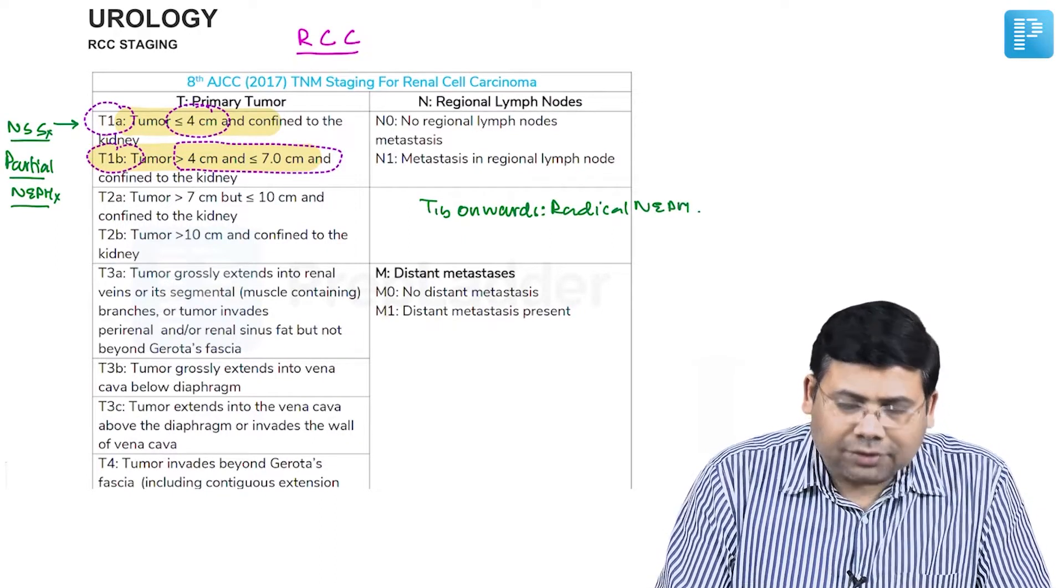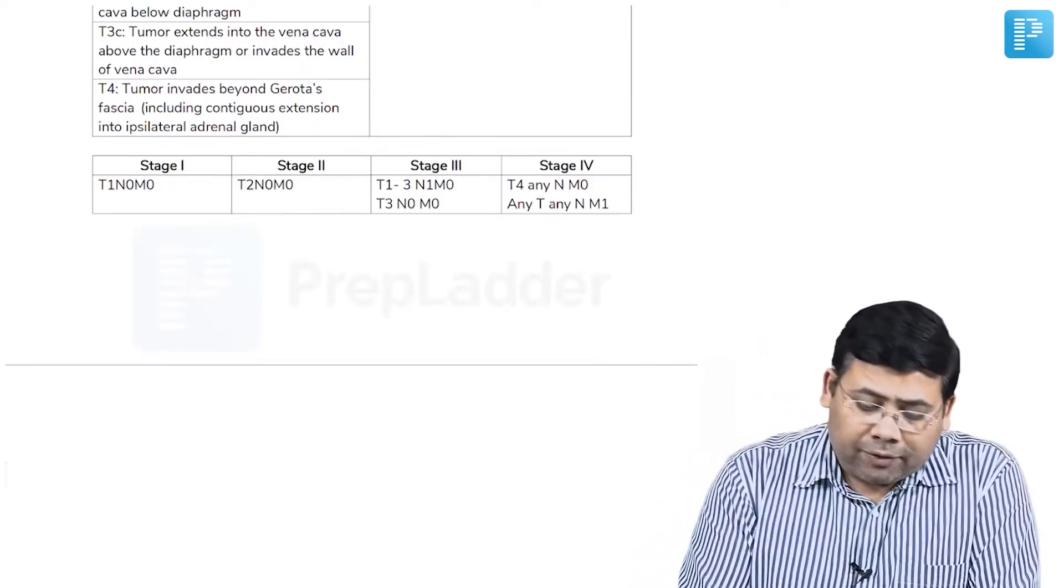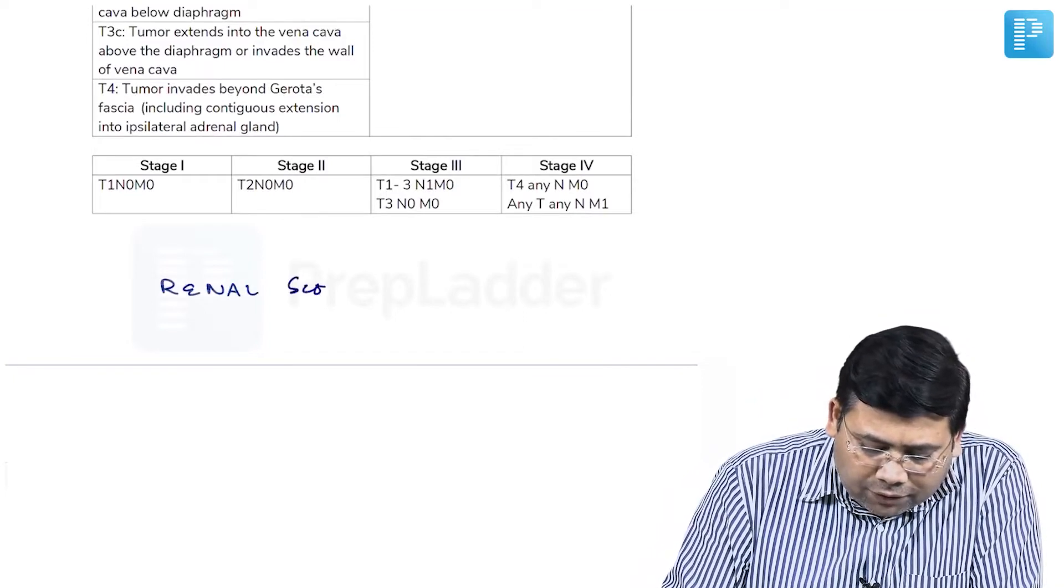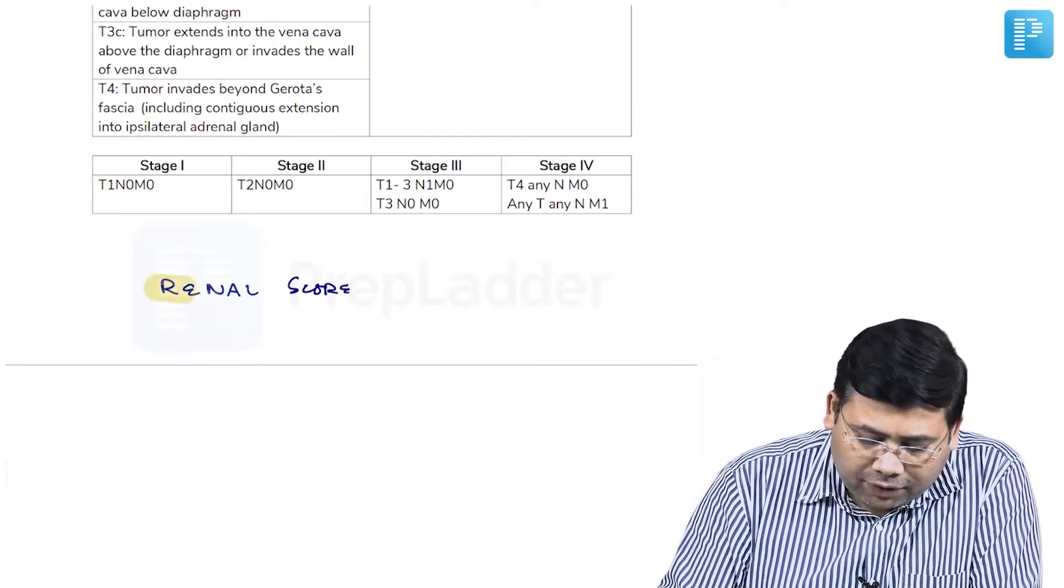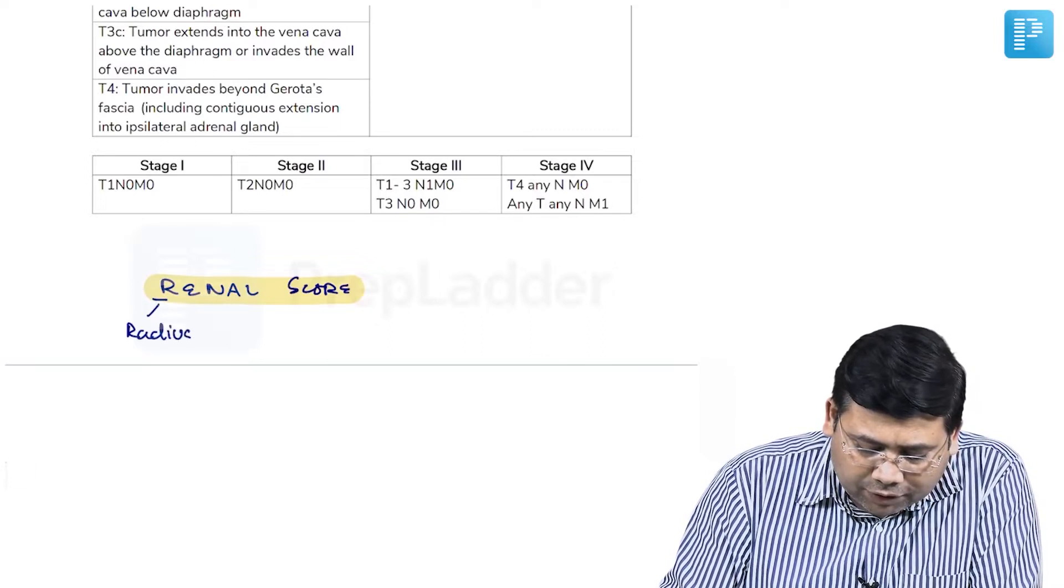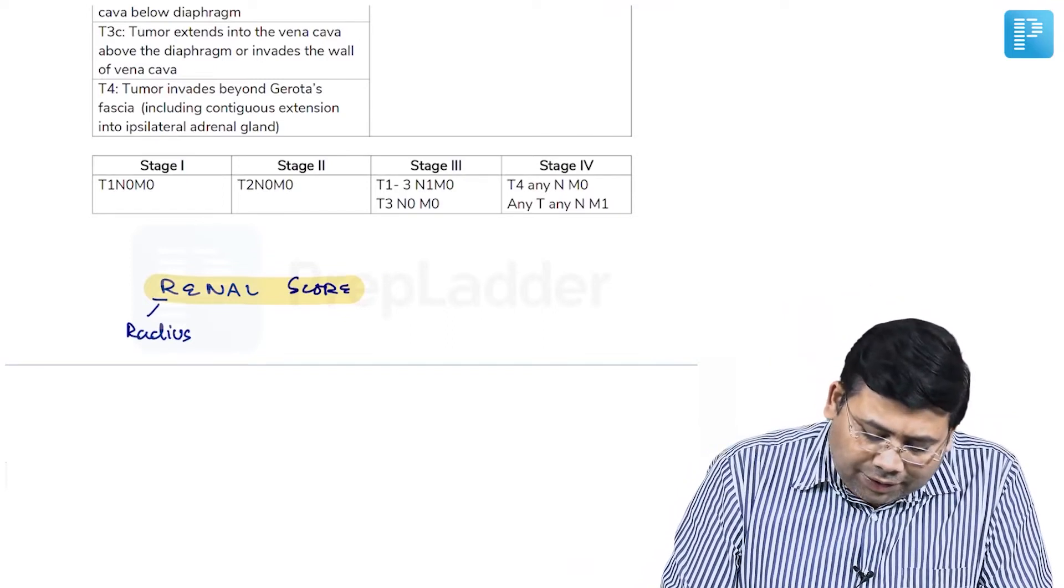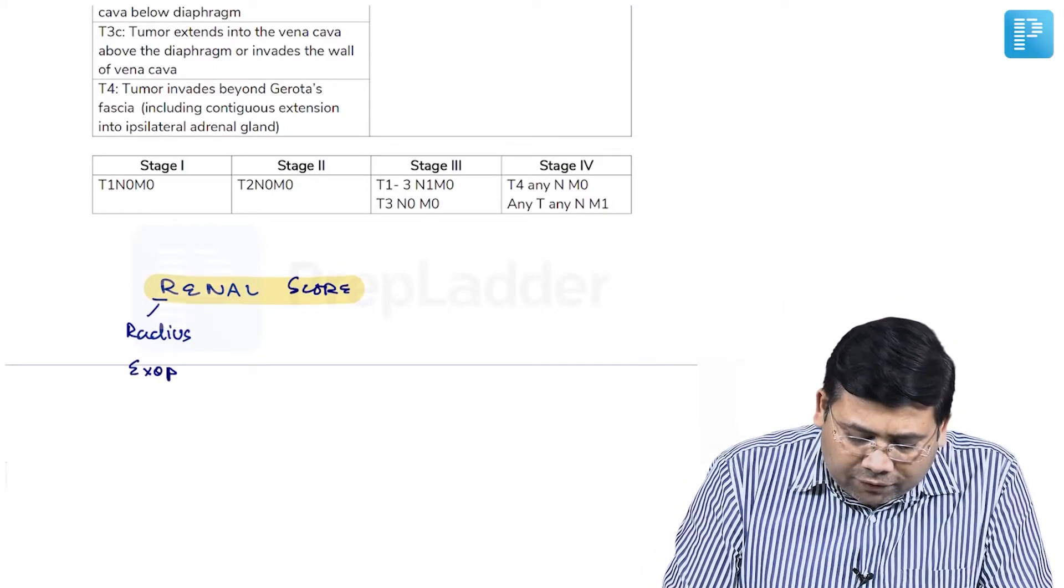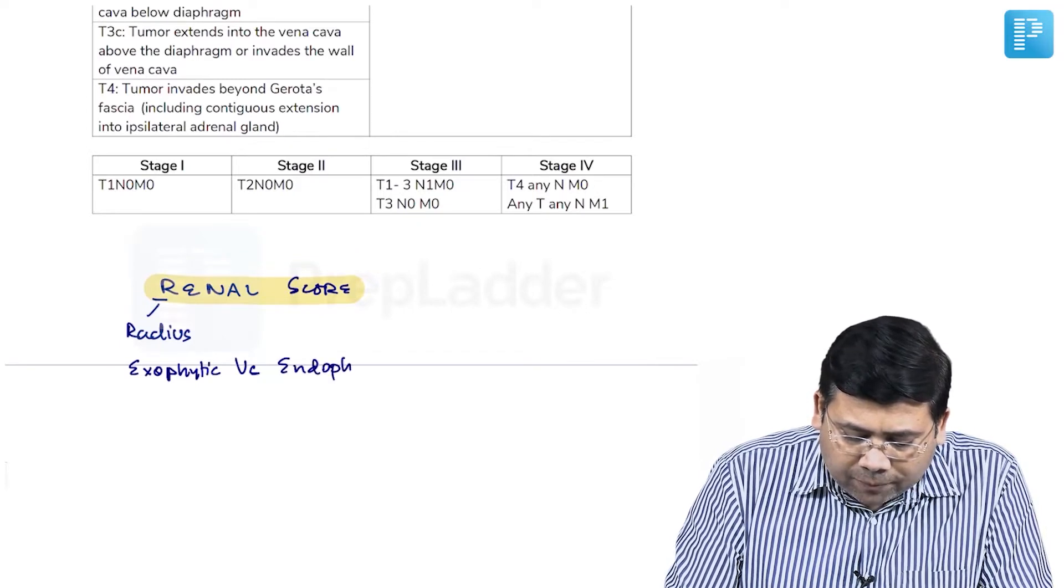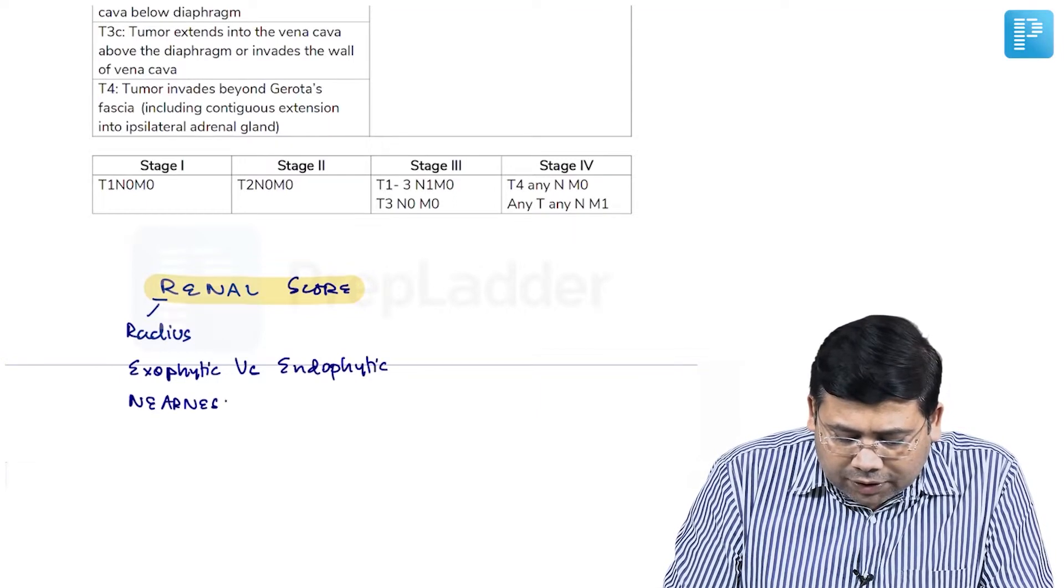This is known as the RENAL score, which is very important. R stands for radius—less than 4 centimeters or more than 4 centimeters. E stands for exophytic versus endophytic. N stands for nearness with calyces, or nearness with the collecting system.